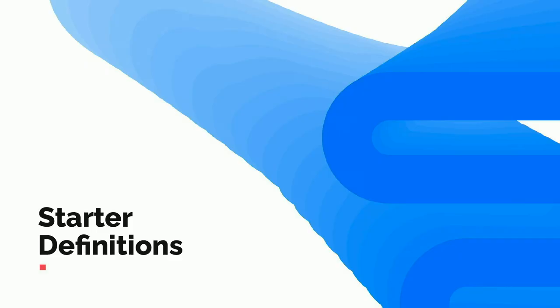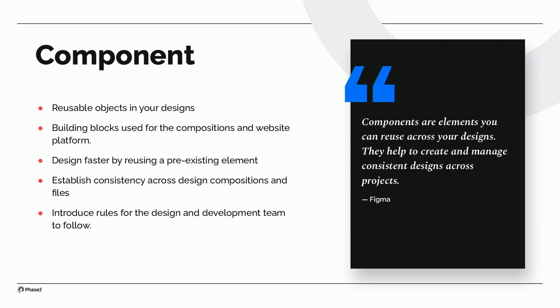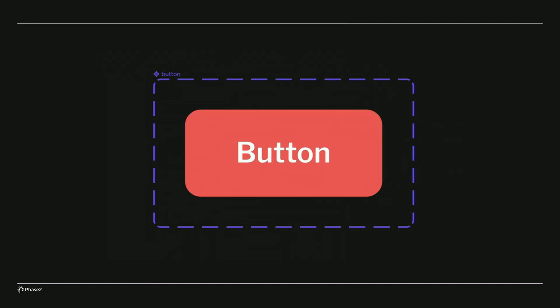Before I get into that, I have some starter definitions just so we make sure we're speaking the same language. We'll start with a component. Components are elements that you can reuse across your designs. They help create and manage consistent designs across all of your projects — they're reusable objects that you can use throughout all of your design compositions. They allow you to work faster and introduce consistency and rules to follow for both designers and developers. Here is a giant button as an example of a base component, with border radius, background, base color and font defined, and text centered within the button.